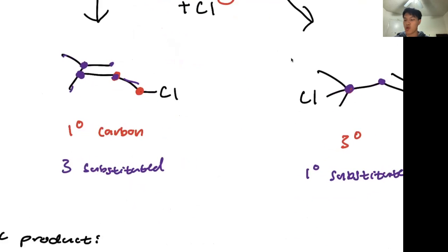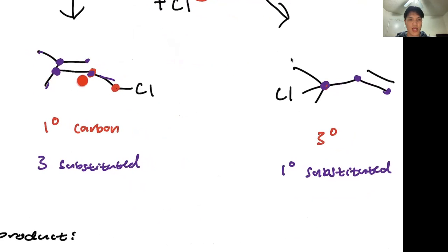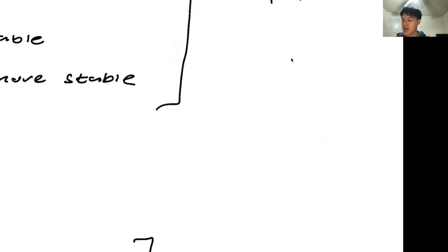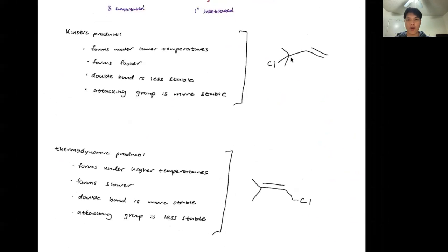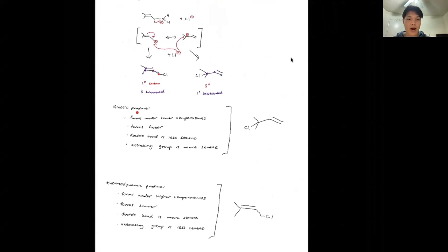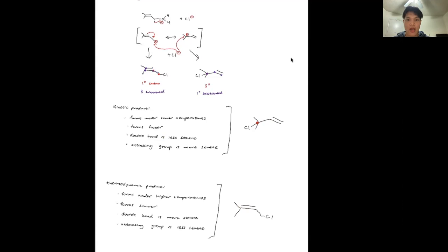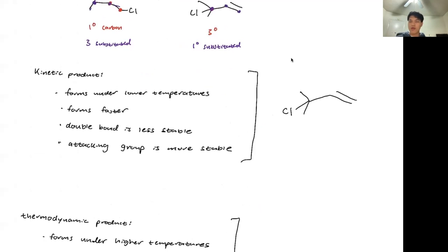If we look at which double bond is more stable — this one is more substituted, which makes it a better double bond. So that product would be more stable, making it the thermodynamic product. The kinetic product forms under lower temperatures and its double bond is less stable. Comparing the two double bonds: one is surrounded by three carbons, while the other is only surrounded by one carbon — not as stable. In the kinetic product, the attacking group is more stable. Kinetic products typically form around negative 10 degrees Celsius.